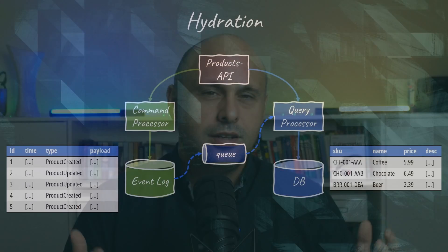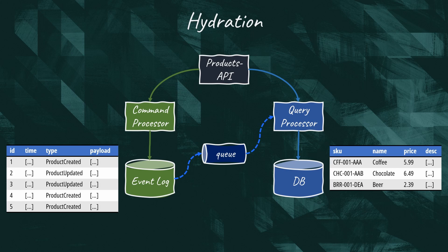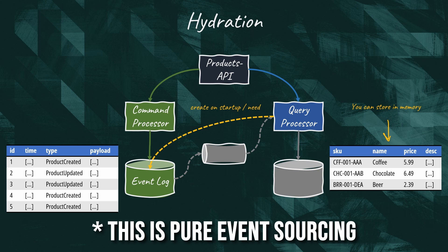The process of reconstructing our domain object is called hydration. In this diagram, we are performing the hydration continuously by consuming events and materializing the view in a database. However, it is also very common to hydrate the model during startup of the app, or on demand by accessing the event log directly.